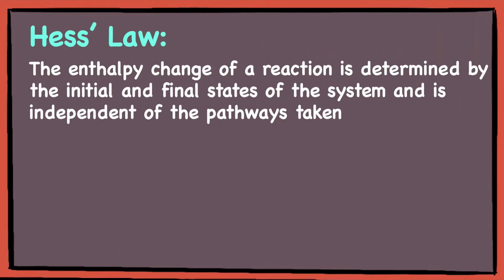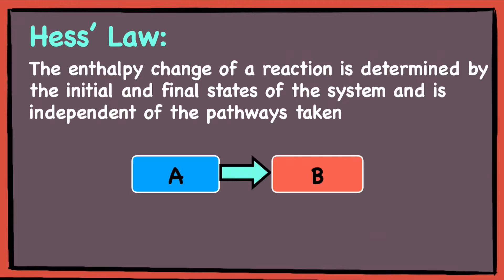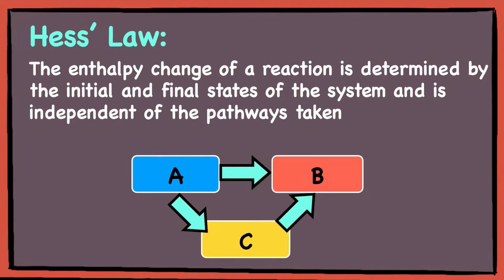Hess's law states that the enthalpy change of a reaction is determined by the initial and final states of the system and is independent of the pathways taken. Which basically is saying: I don't care how you do it, but I just want to see that you can get from point A to point B.